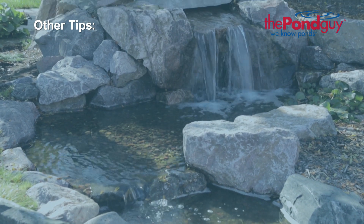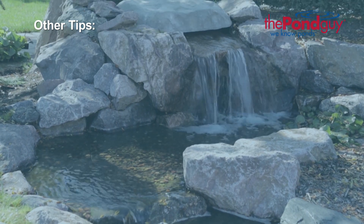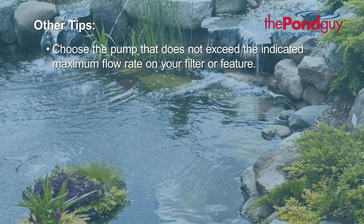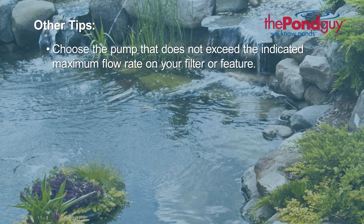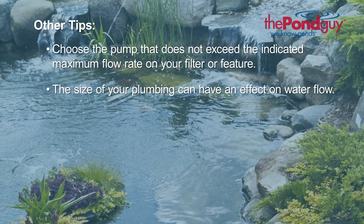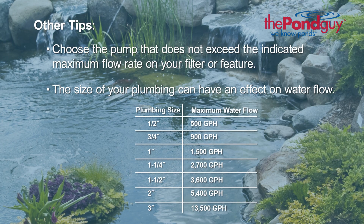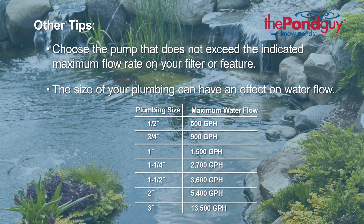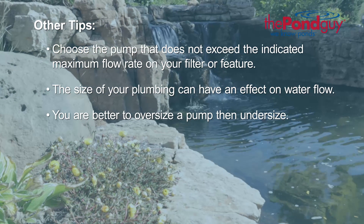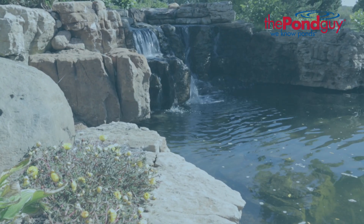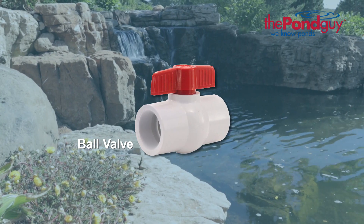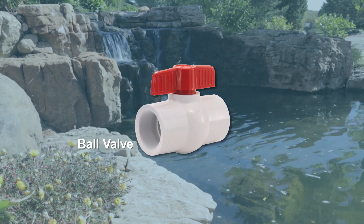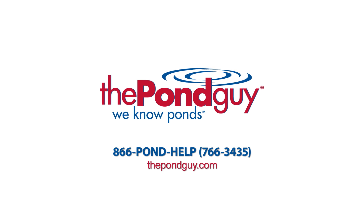Here are a few other tips to help you select the appropriate pump for your waterfall. Choose a pump that does not exceed the indicated maximum flow rate on your filter or feature. The size of your plumbing can have an effect on water flow — it's important to note that each size plumbing has a maximum water flow rate, as seen here. You are better to oversize the pump than undersize. When oversizing, you can always install a ball valve to reduce the water to your desired flow. For more expert tips, visit us online at thepondguy.com or give us a call at 866-POND-HELP.